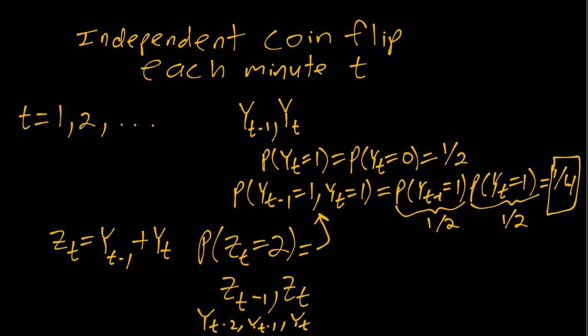But again, those are stationary. In other words, those distributions don't depend on t, so neither does the joint distribution of zt minus one and zt. So in this case, both yt and zt are strictly stationary time series.